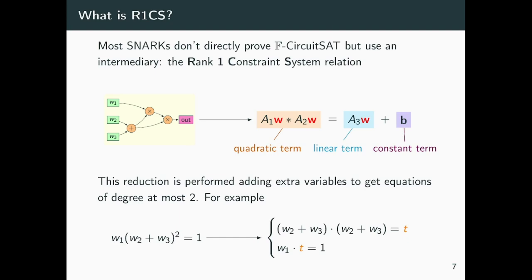Let's move on to the next relation that is essentially equivalent to circuit satisfiability, the rank-1 constraint system relation. All the SNARKs mentioned so far, instead of proving directly circuit satisfiability, they actually address this equivalent problem, where instead of having just one polynomial equation of high degree, which is represented by the circuit, they deal with a system of several equations, all of them having degree at most two.